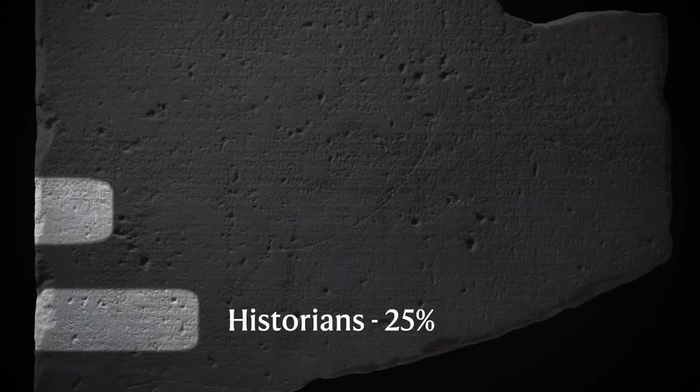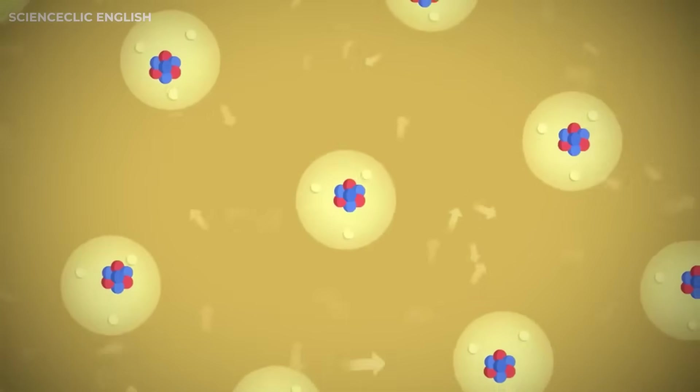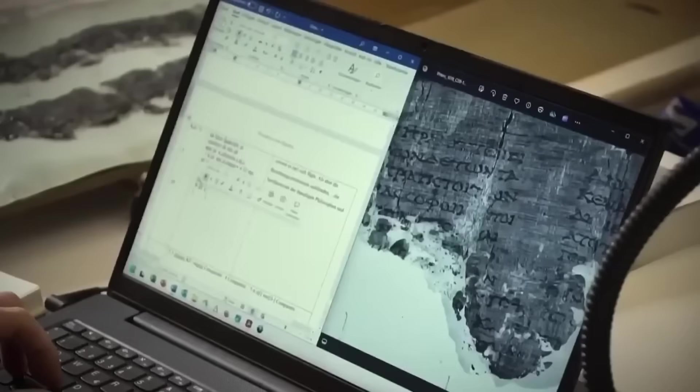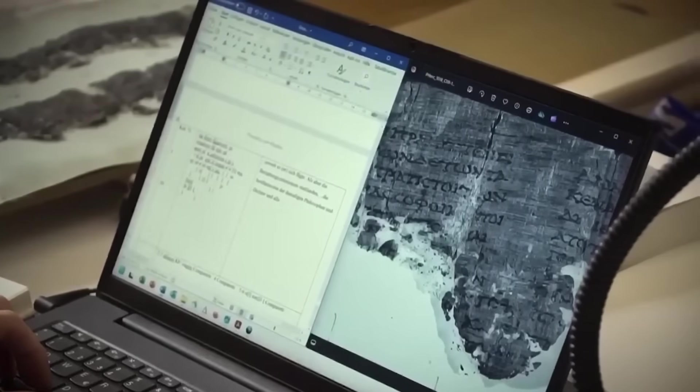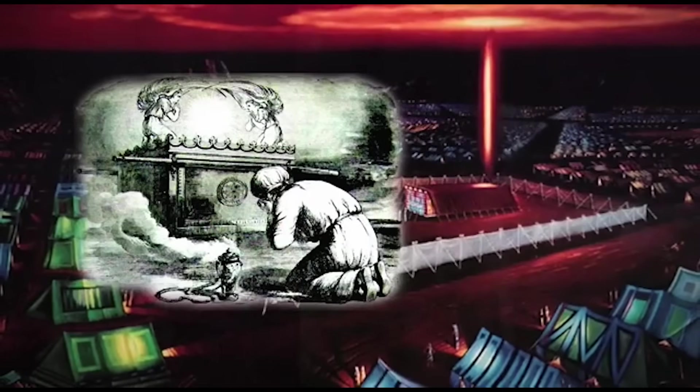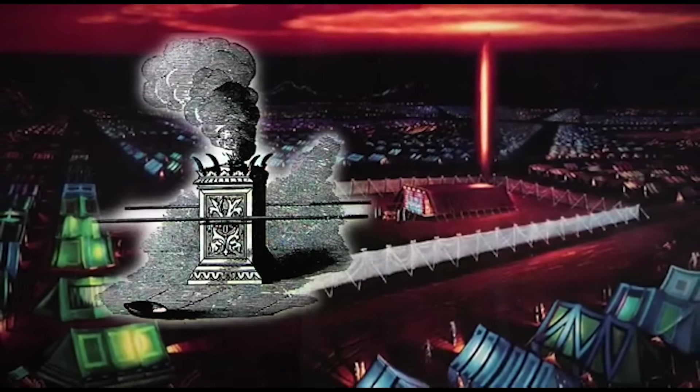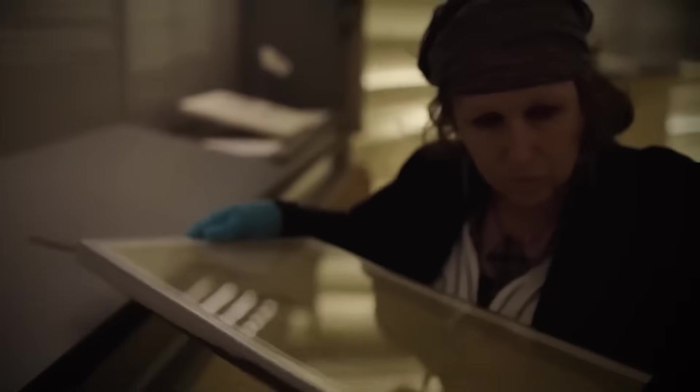The phrase, eternal vessel of radiance, might be a mistranslation or poetic language for something mundane. It could refer to a smelting furnace, a religious artifact, or even a container of precious stones that reflect light. Or, it might signal something profound, evidence that ancient people encountered energy phenomena they couldn't explain with their existing knowledge. The beauty of science is that we'll eventually find out. Through rigorous verification, peer review, and physical investigation, the truth will emerge.